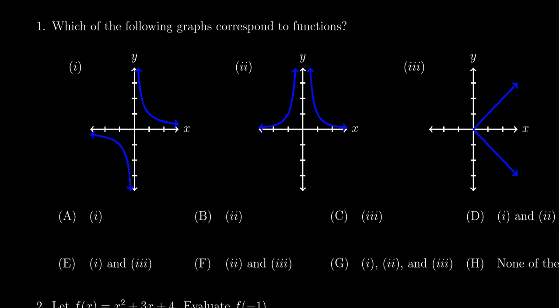If you're given the graph here it'll be a function if it passes the vertical line test, that is every vertical line that intersects the graph should do so only at one point.